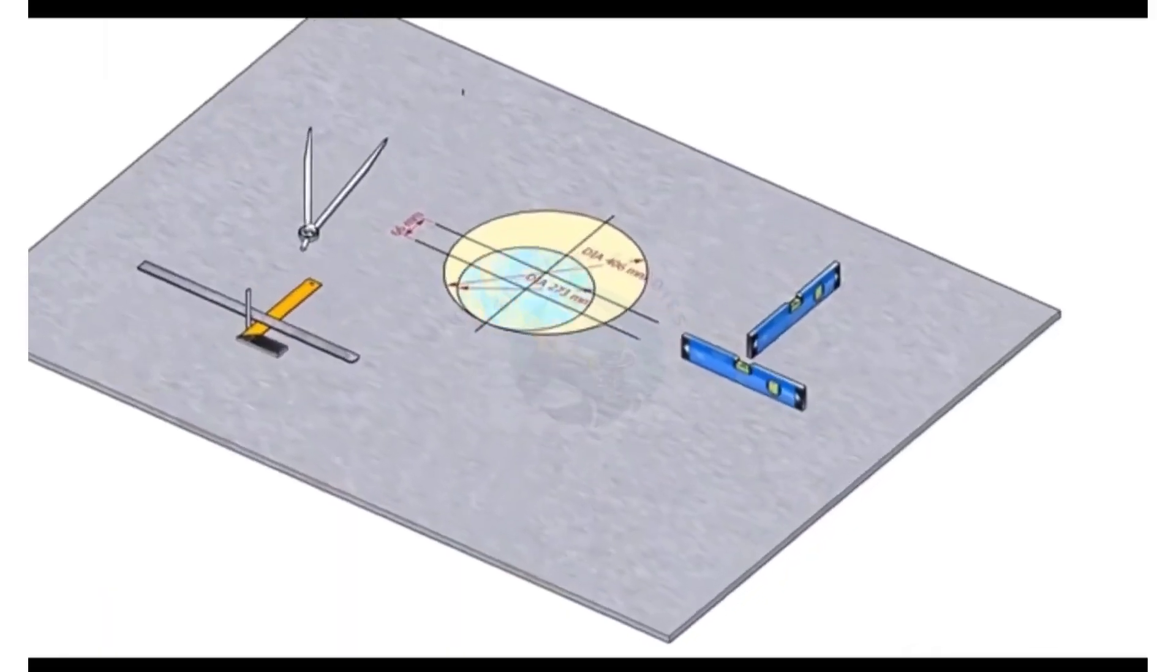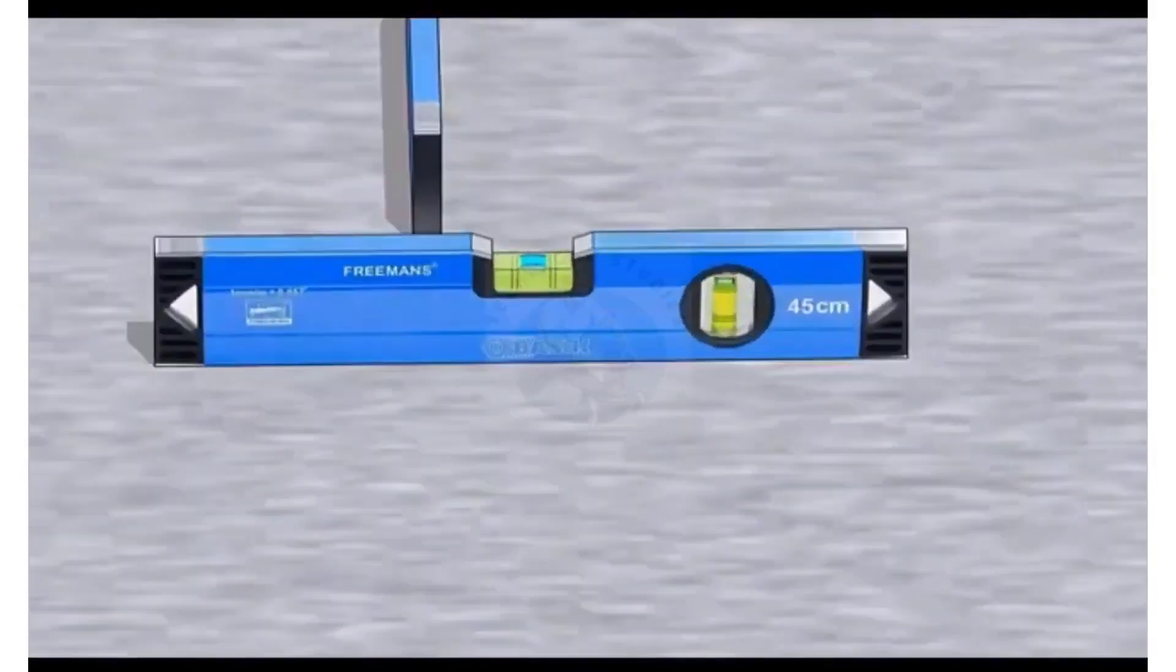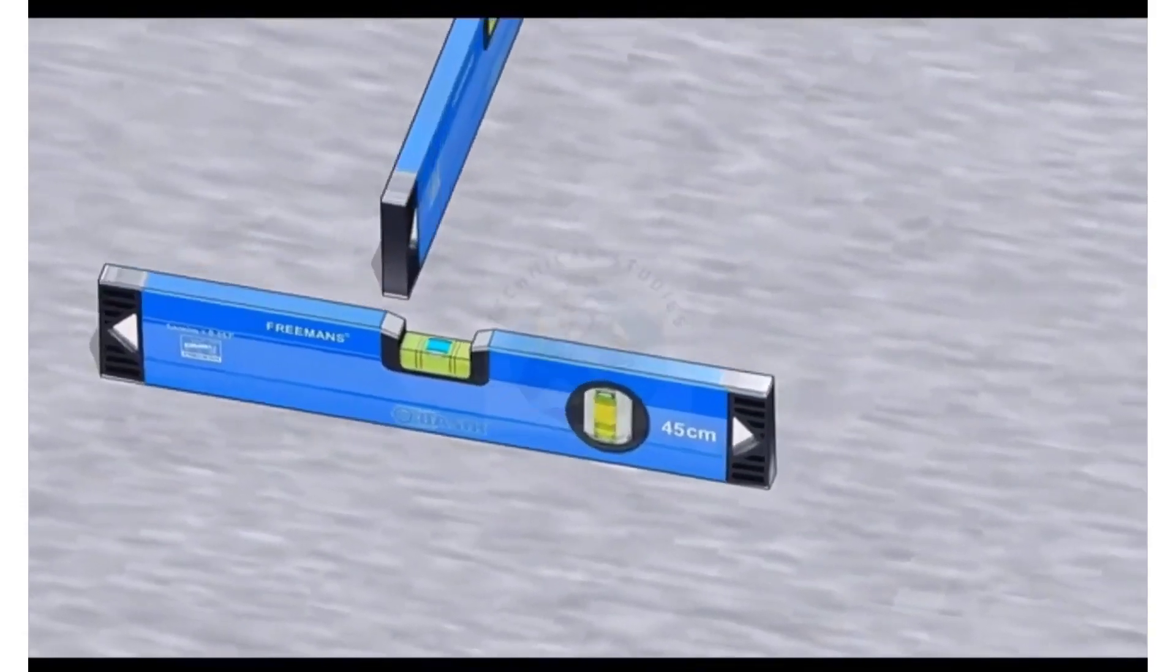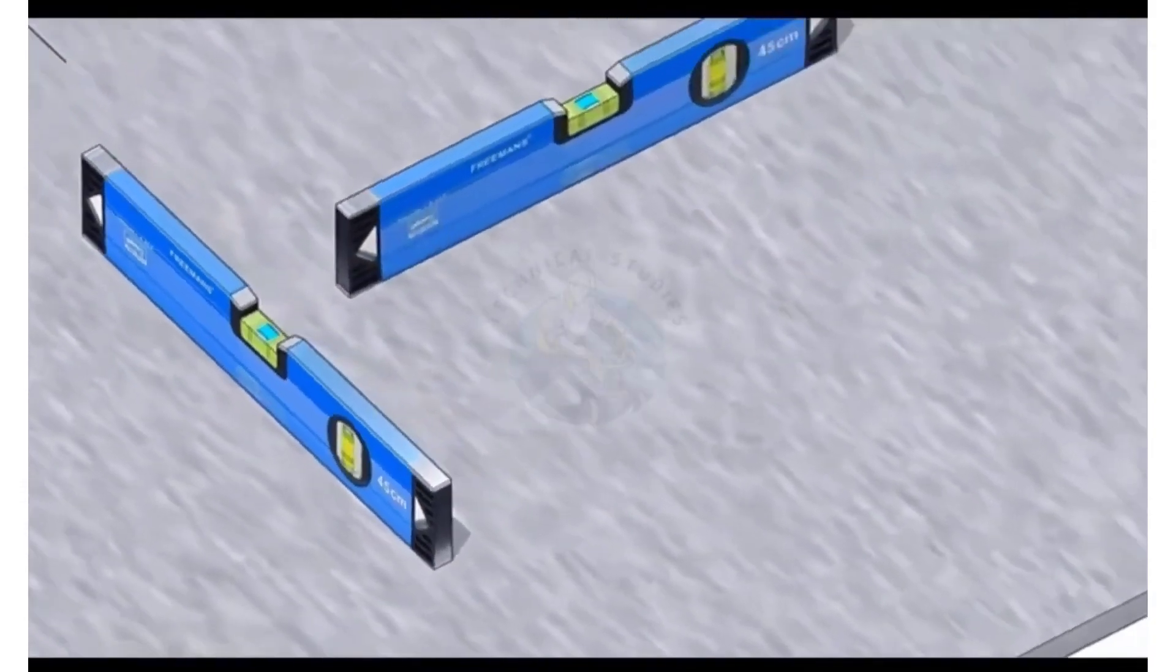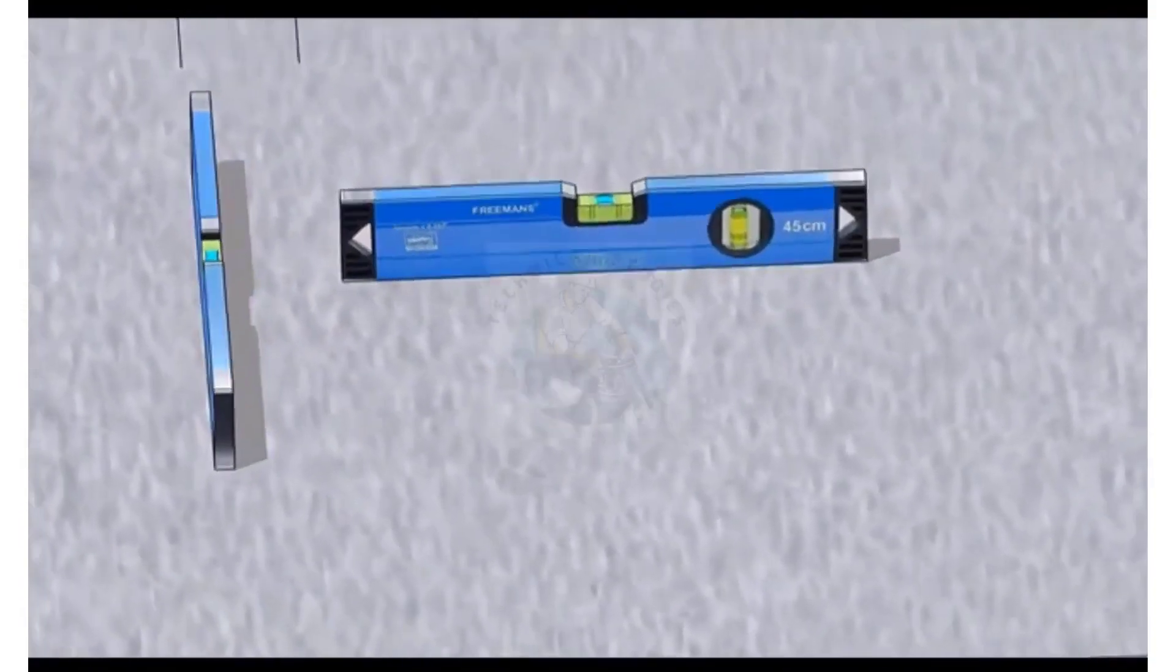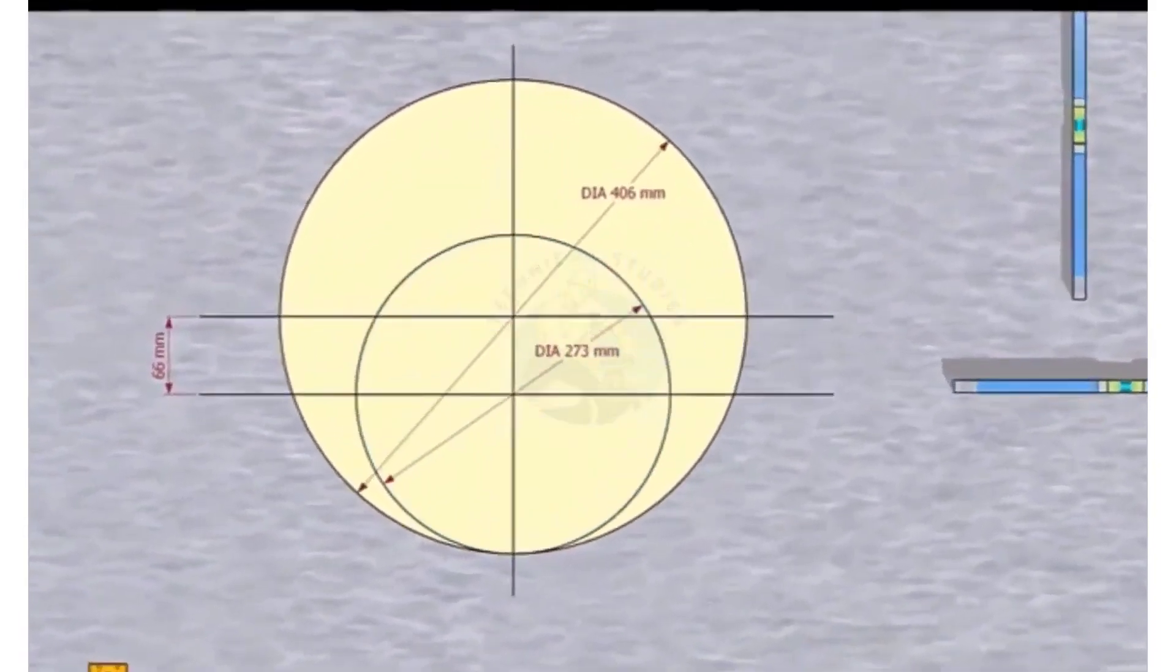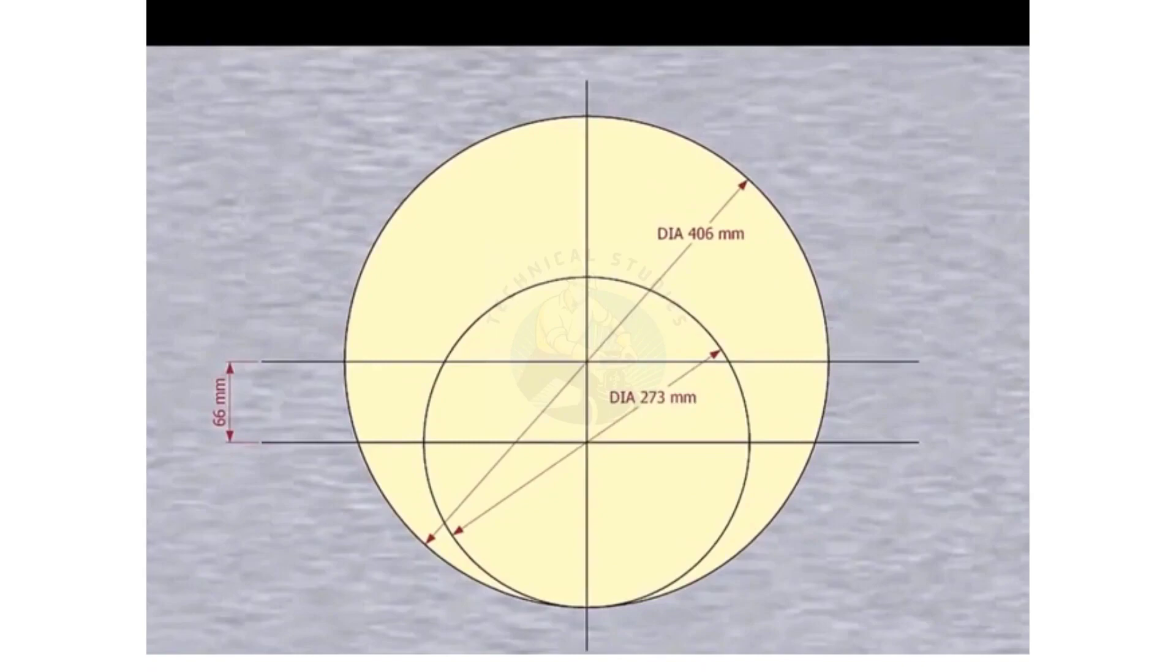Let us mark the center line. Check the levelness of the platform. Please remember that our reducer size is 16 inch into 10 inch. The large side OD is 406 millimeters, the small side OD is 273 millimeters, and the eccentricity is 66 millimeters.